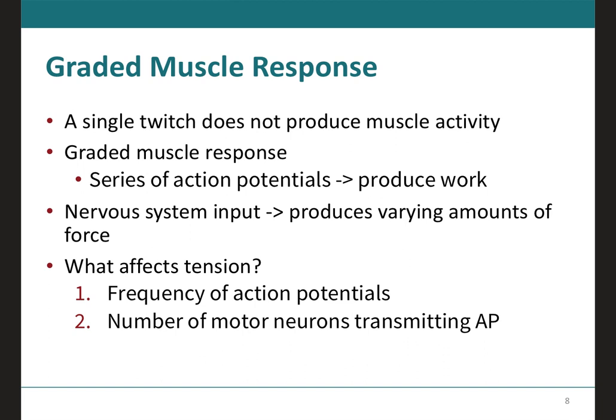A single nerve action potential in a somatic motor neuron will elicit a single muscle action potential in all the skeletal muscle fibers it synapses with, and action potentials always have the same size in a given neuron or muscle fiber. By contrast, the force of muscle fiber contraction can vary — a muscle fiber can generate much greater force than results from a single twitch — which is why skeletal muscles can produce graded contractions that vary in strength depending on the force needed. Two factors affect tension: the frequency of action potentials and the number of motor neurons transmitting them.